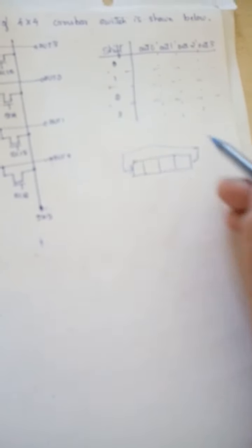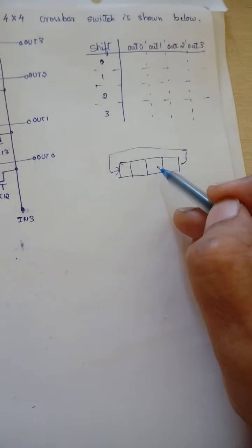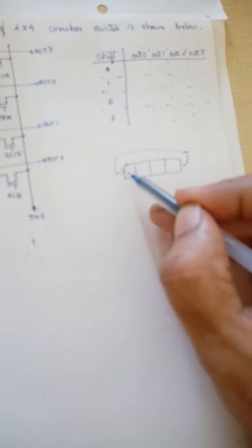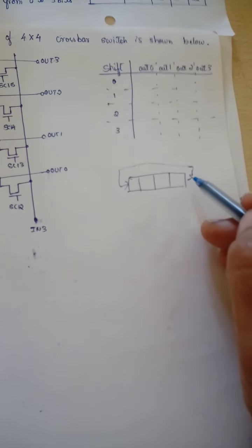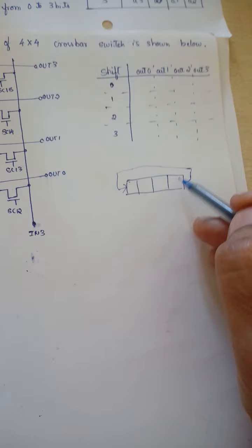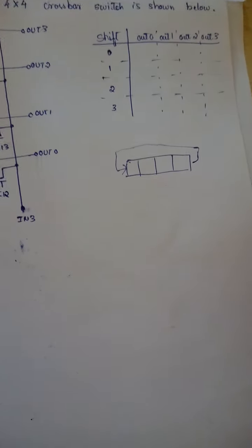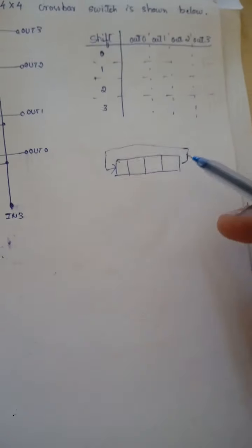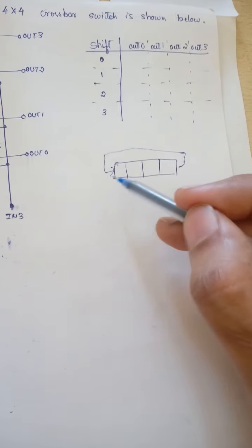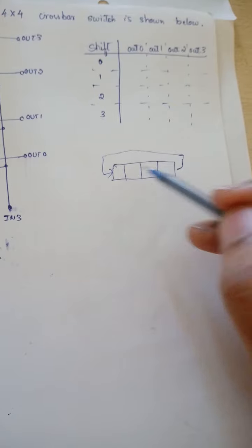Shifting should take place on an end-around basis — that is, any bit shifted out at one end of the data word will be shifted in at the other end. It can be analyzed for a 4-bit word that a 1-bit shift right is equivalent to a 3-bit shift left, and a 2-bit shift right is equivalent to a 2-bit shift left.